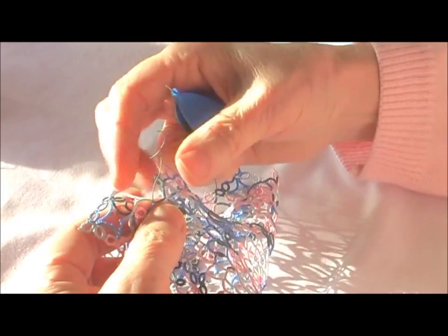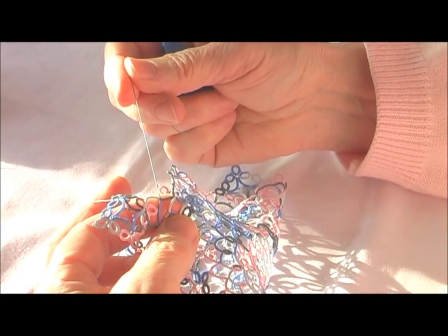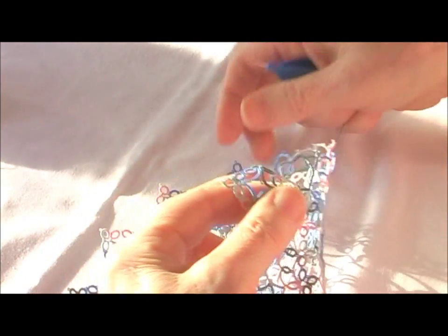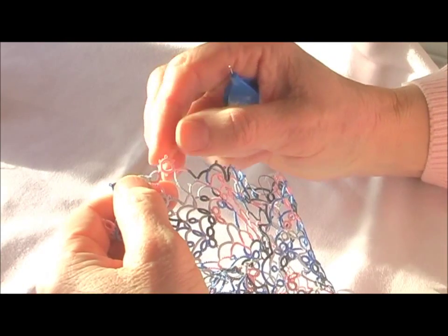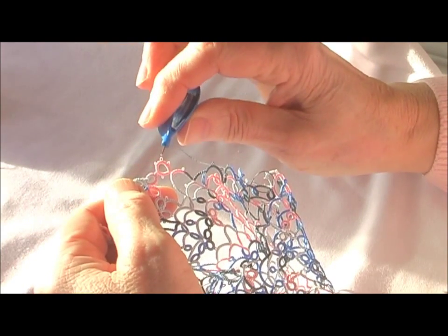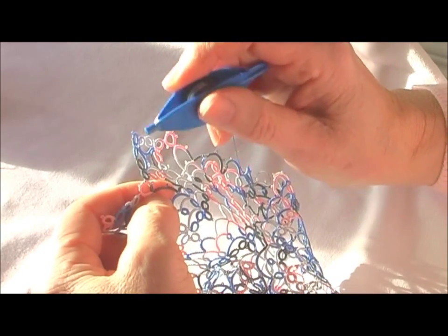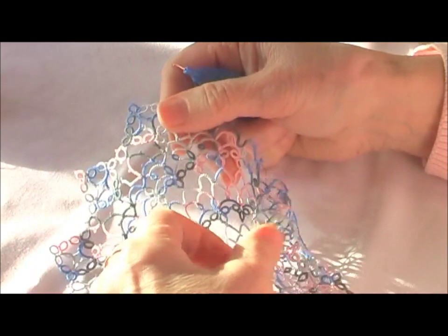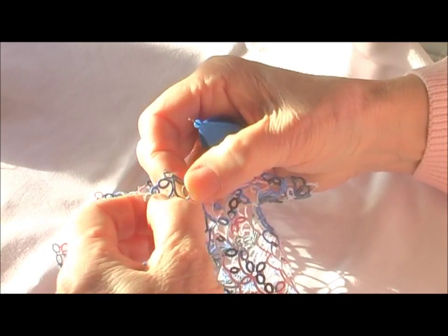We'll start again with our 7 chain as we did at the beginning of the video. When you get all the way round to the first one, your last repeat will be joining to the first ring. The second clover that you make, and it's really not that difficult, a little fiddly, but I hope this has explained all the little difficulties.